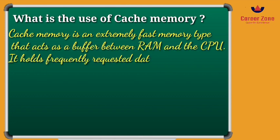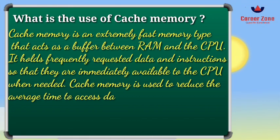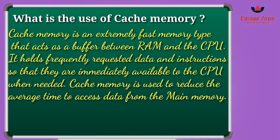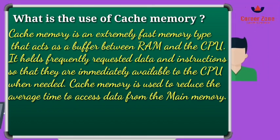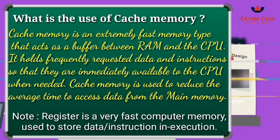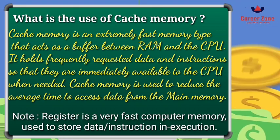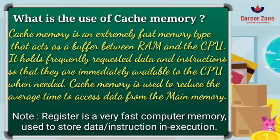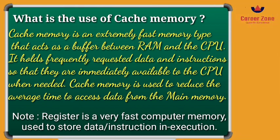Now let us look at what cache memory is and what its use is. Cache memory is a memory placed nearest to the processor. This memory holds the requested data and instructions from the user, which are immediately available to the CPU. It is also capable of reducing the access time from the main memory. So to access data more quickly and frequently, cache memory is placed nearest to the processor.